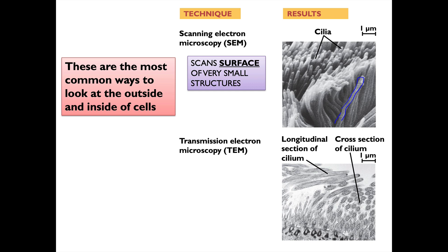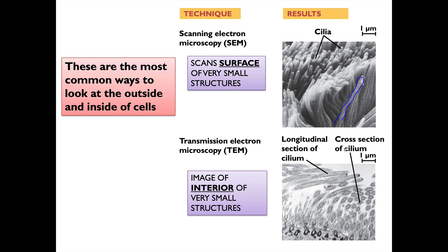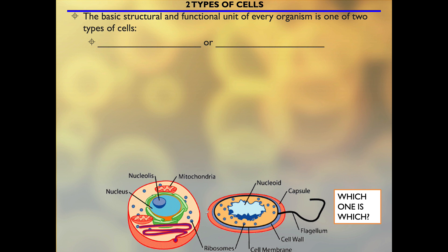Now let's contrast that with transmission electron microscopy. It still zeroes in on very small things, but the electrons cut through the specimen and show us what's on the inside. These cilia here — we're looking at their interior from the side and can see little long lines on the inside. So if we were studying them, we'd figure out what those interior structures are. Both types ultimately magnify an incredible number of times to show us what we need to see.